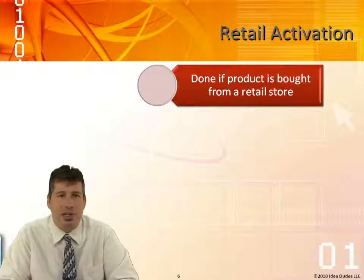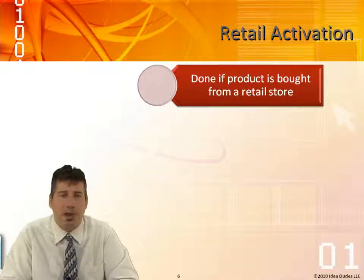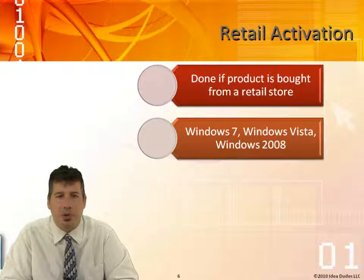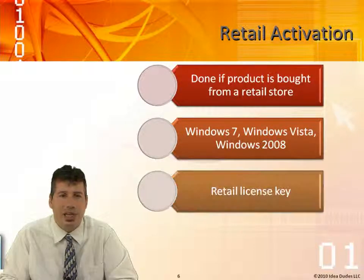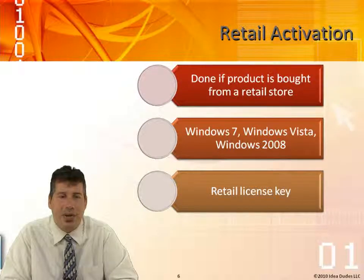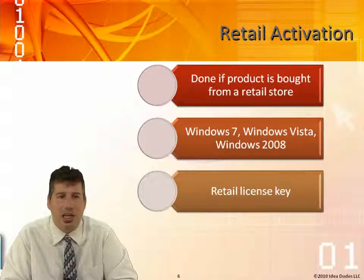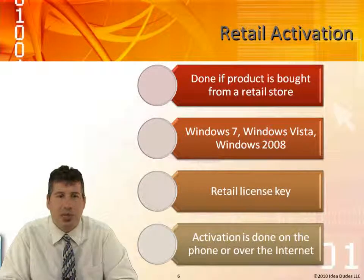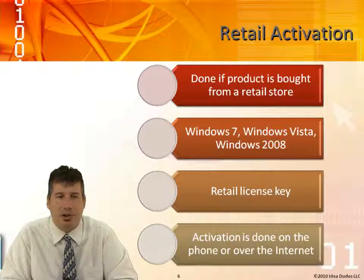Retail activation is done if the product is bought from a retail store — Windows 7, Windows Vista, Windows 2008. There's a retail license key, which is the little gold key on the back of the DVD. That key only allows you to activate that software. Activation is done over the phone or over the internet.